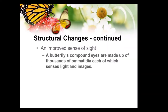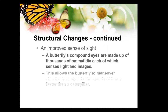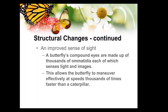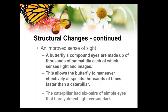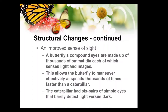It also has a much better sense of sight. The compound eyes — which if you look online under an electron microscope — have thousands of ommatidia, which are like those found in bees' eyes. This allows a butterfly to maneuver at speeds thousands of times faster than the caterpillar, which obviously it needs to do. The caterpillar had very simple eyes. So again, it's totally redesigned — there's nothing like a step forward; it's a whole new body design.